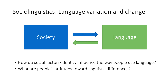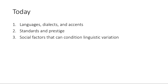We can ask questions like: how do social factors and identity influence the way people use language? In answering this question, we focus on structured variation — how people differ speaker to speaker, group to group, based on different social groups. We can also ask questions about people's attitudes toward language and linguistic differences. Today we'll talk about both, define languages, dialects, and accents, discuss standards and prestige, and go through specific examples of social factors that condition linguistic variation.